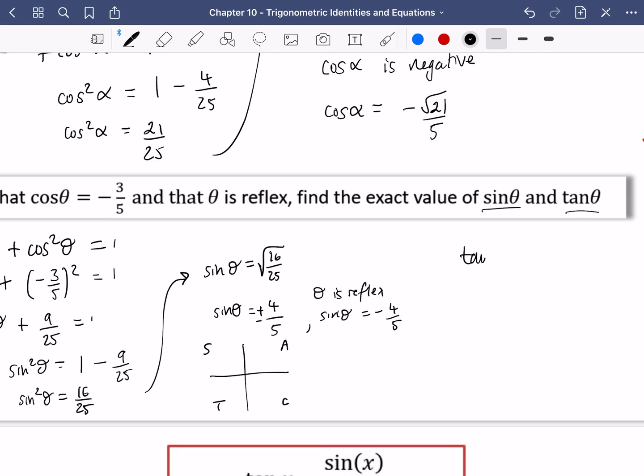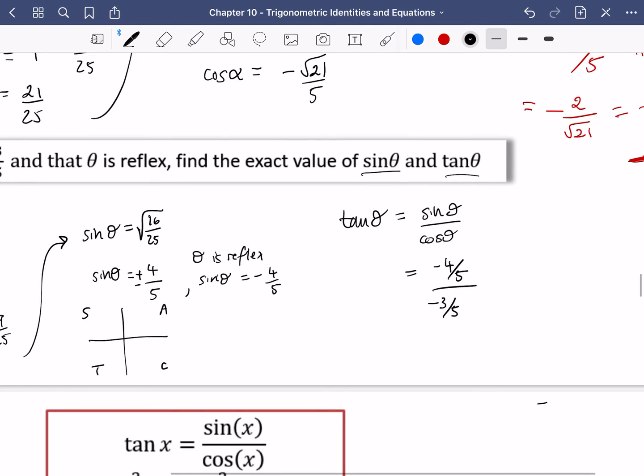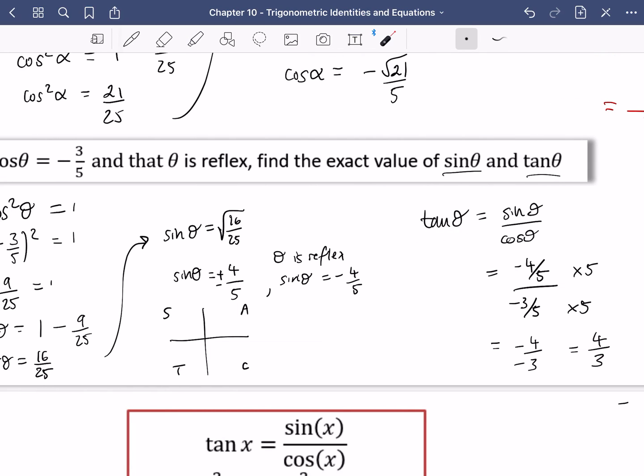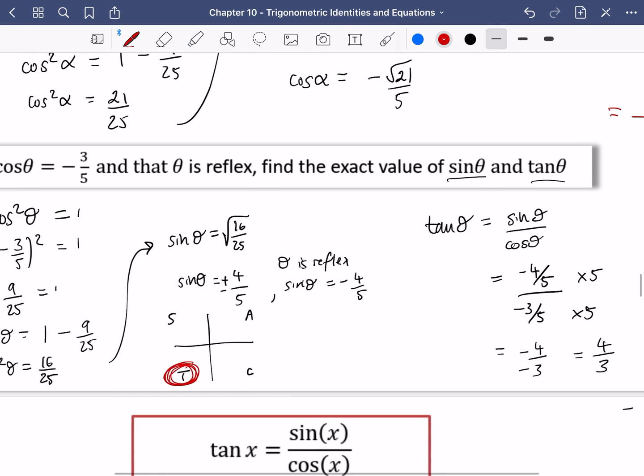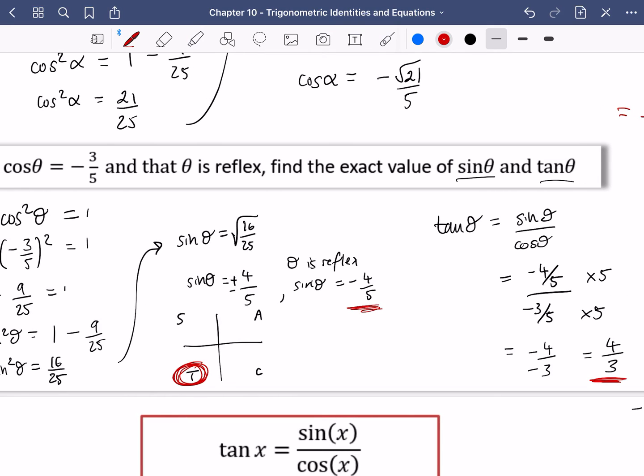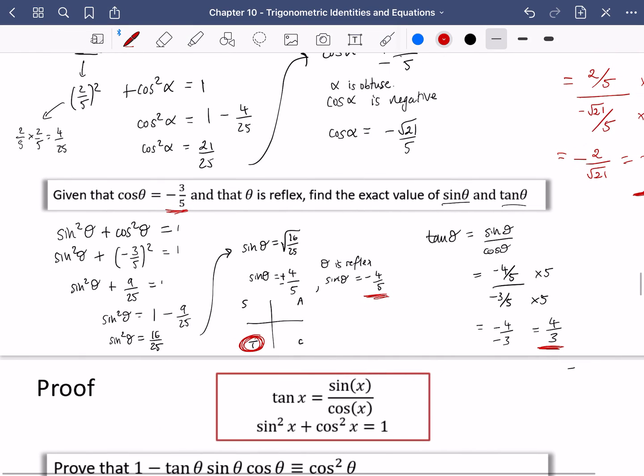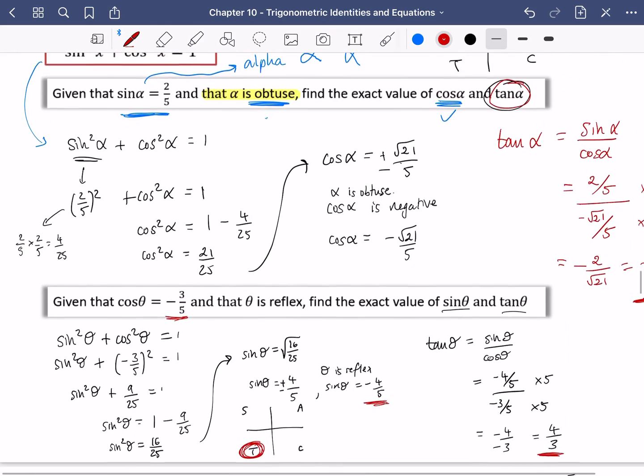All we have to do now is find out what tan theta is. Now tan theta is sine theta over cos theta. And sine theta is minus four fifths, and cos theta is minus three fifths. Now I'm going to do the same thing as I did before. I've got fractions within fractions. I want to get rid of those denominators by multiplying by five. So I've got minus four over minus three. The negatives cancel, and you just get four over three. Now it's interesting to note that tan theta is positive, cos theta is negative, sine theta is negative. And it said it's reflex. So actually we know which quadrant it's in. It must be in this quadrant because tan is positive, sine is negative, and cos is negative. Okay, I'm going to split this up because we're going to be going into some proof, which feels like quite a different topic. But this will help you with a few questions from exercise 10c.